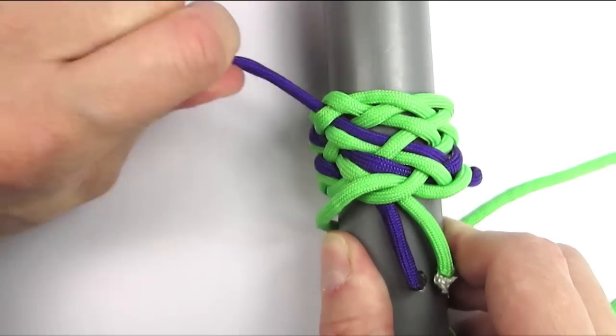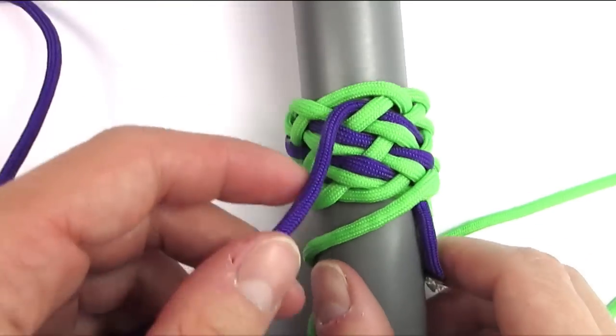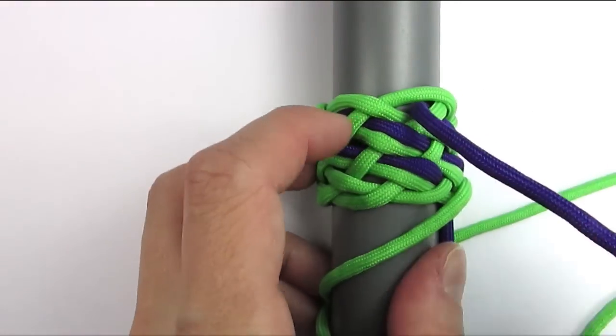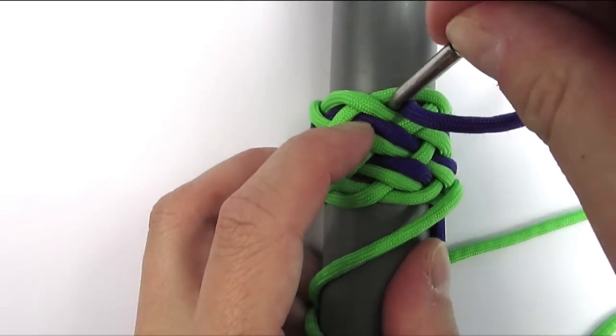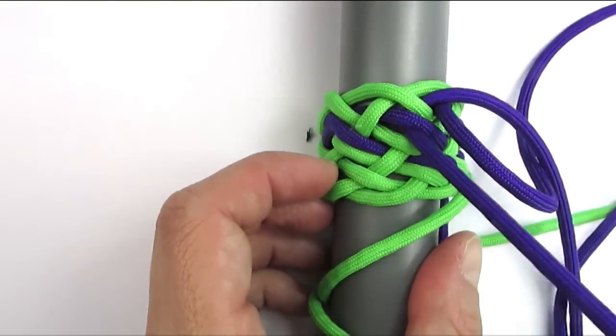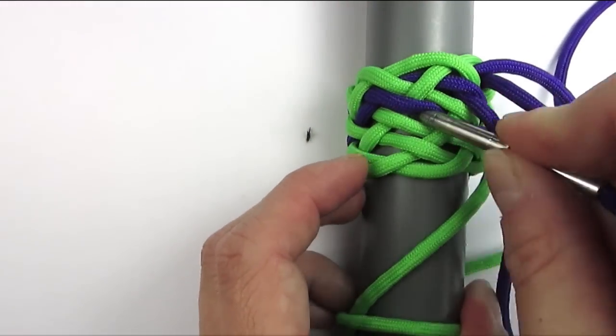We're going to again change the sequence a bit by going under 2, then over 2, then under, over, under.